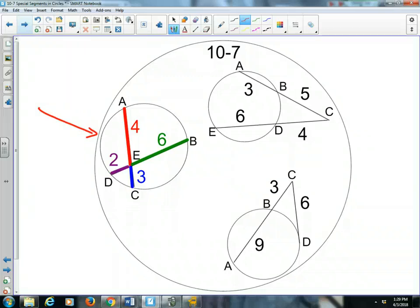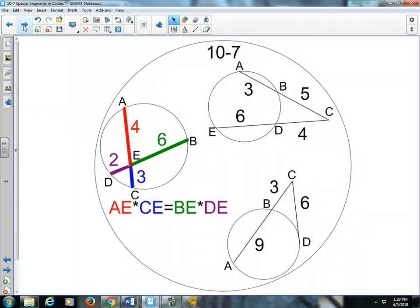Notice the product of 4 times 3, so the two pieces of that chord, 4 times 3 is 12. And the two pieces of chord B-D are segment B-E and segment E-D, 2 times 6. They're both 12. This isn't coincidental. This happens in every circle when two chords intersect. Their products equal each other.